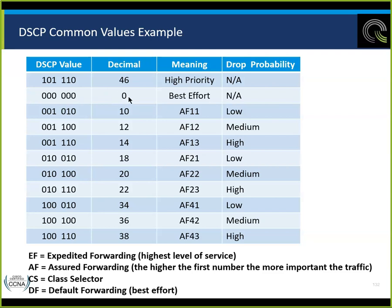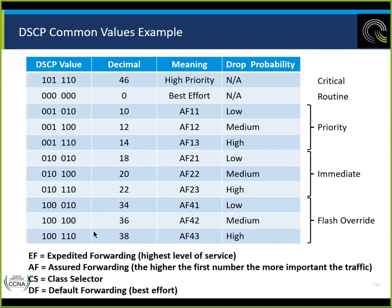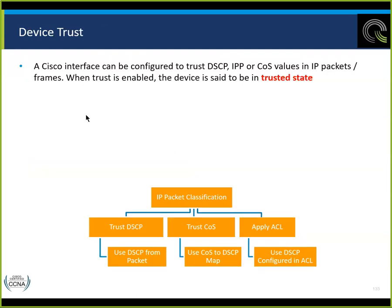We have critical, high priority, routine, immediate, and flash override. If you're ever going to configure this, you're going to look these numbers up. These are not things you need to memorize — just conceptually understand what we're trying to do.